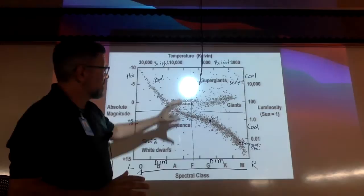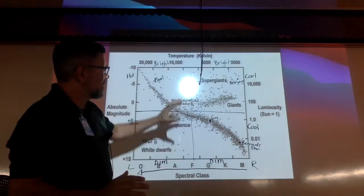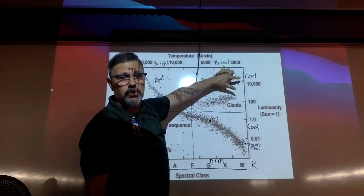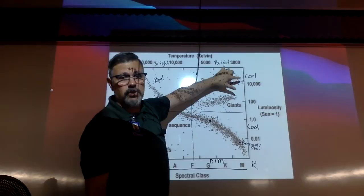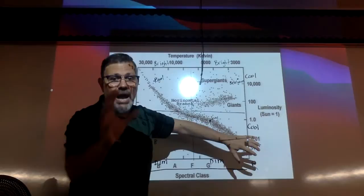What I did also is added some stars in here so you kind of can see where they go. We have the sun located here. We have Betelgeuse up here where it's bright and cool. These are also known as the supergiants. This group here is supergiant. This group here is the giants. 90% of all stars you see in the sky are along this main sequence, okay?